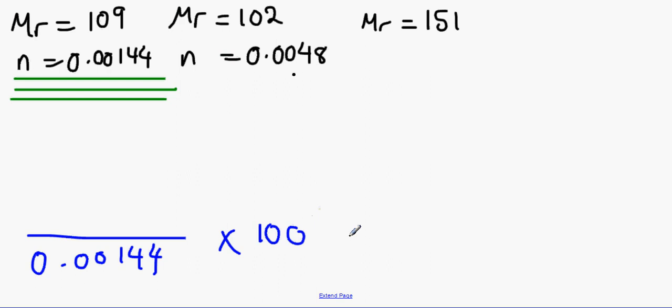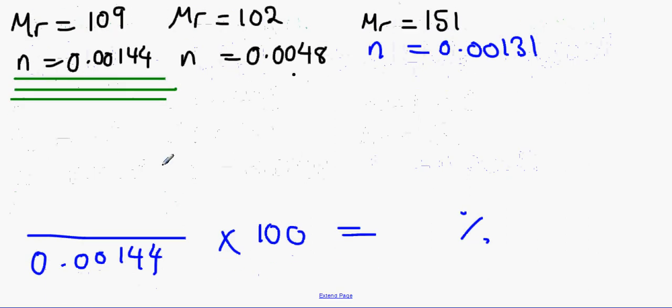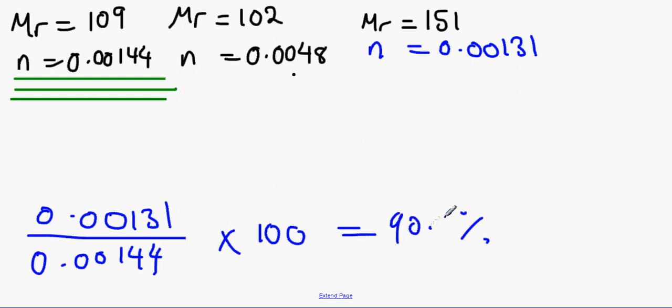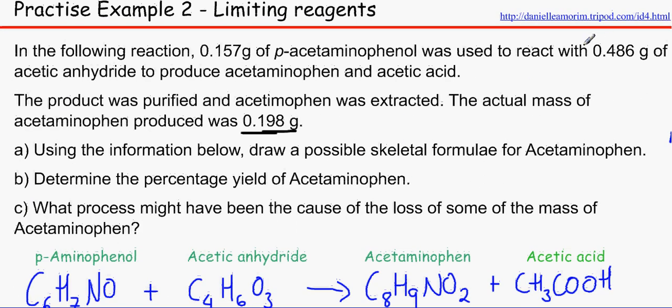And we would need to use that as our maximum theoretical moles that is produced. So let's just write it here: 0.00144. Now we have got to find out the actual number of moles for this. All we've got to do is divide that by that and we would get 0.00131. All we've got to do is just write it here, 0.00131, divide those together, times by 100, and we got 90.97%.